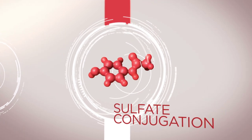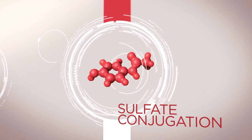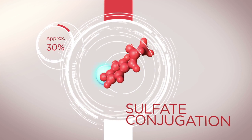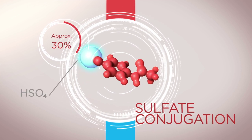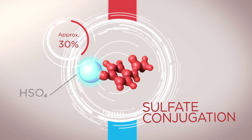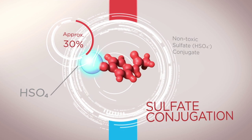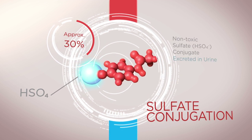The sulfate conjugation pathway accounts for approximately 30 percent of acetaminophen hepatic metabolism. The resultant non-toxic sulfate conjugate is also excreted in the urine.